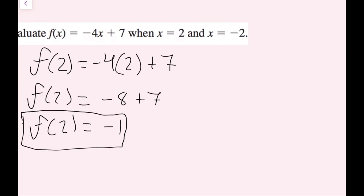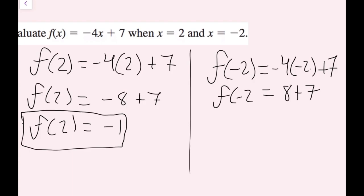For negative 2, I'm going to do the same thing. I'm going to plug in f of negative 2. So anytime I see an x, I'll plug in negative 2. So negative 4 times negative 2. Remember, always plug in with parentheses, especially with negative numbers, plus 7. Well, now I have negative 4 times negative 2, which is positive 8. So 8 plus 7. So f of negative 2 is going to equal 15. And now we're done with this one.